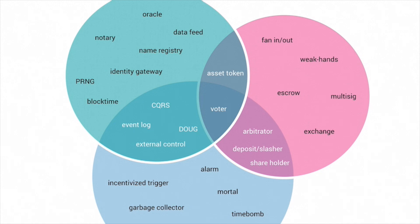The red circle covers transaction and value-related patterns — multi-signature, exchanging currency, escrow, asset tokens, having to deposit some kind of value, fan-in, fan-out — everything related to value and value being transferred.